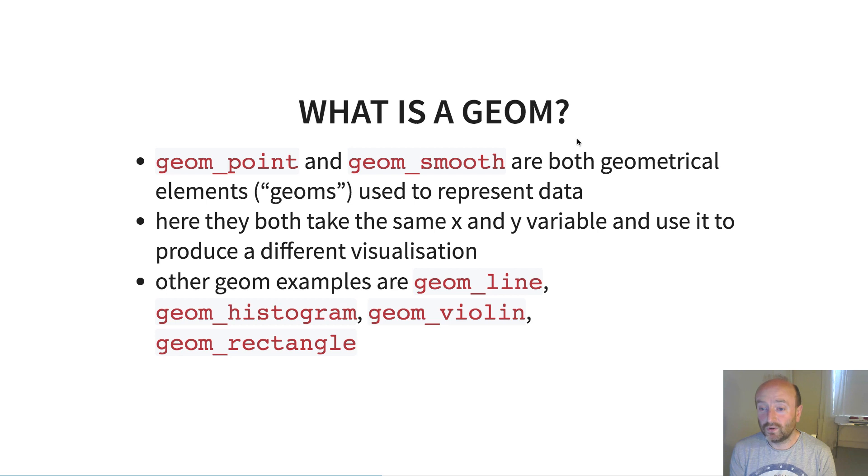So I've been talking in passing about geoms. So what are they? Geom_point and geom_smooth are both geometrical elements, which is abbreviated as geoms, that are used to represent data. So here they both take the same x and y variable, and they use it to produce a very different visualization. So geom_point draws a kind of scatter plot and geom_smooth draws some sort of regression line. There are many other types of geoms. For example, there's geom_line, which draws a line, geom_histogram, geom_violin, geom_rectangle. And there's a rich combination, a rich zoo of geoms that are available to you in the ggplot package.